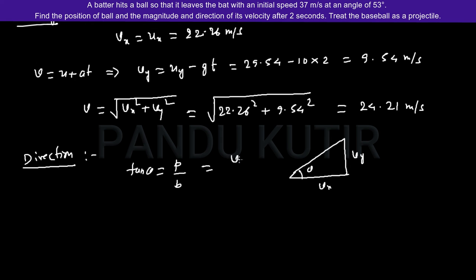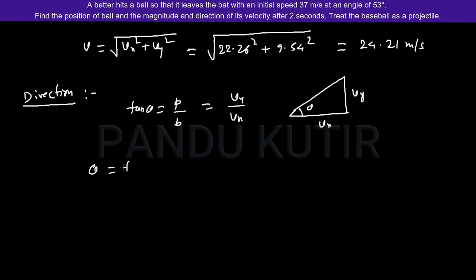So it is Vy by Vx. Theta equals tan inverse Vy by Vx equals tan inverse 9.54 divided by 22.26 equals 23.198 degrees.